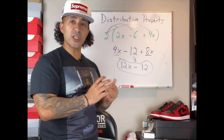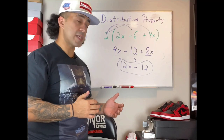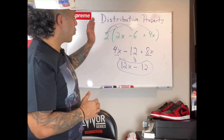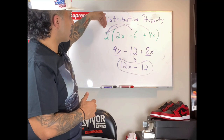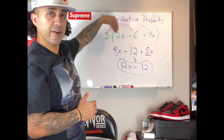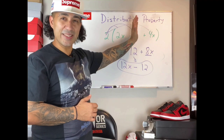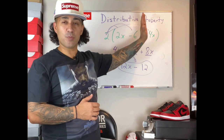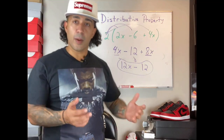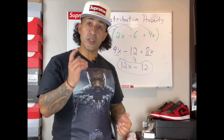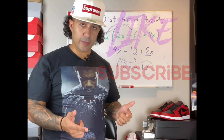So just as a little recap: the distributive property tells us that we can multiply whatever number is on the outside of the parentheses by every term within the parentheses, and then see if that expression can be simplified anymore. I'm Mr. Doniz — please be sure to like and subscribe, and I'll see you next time.